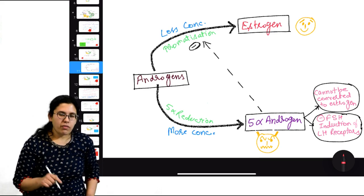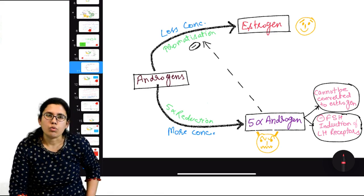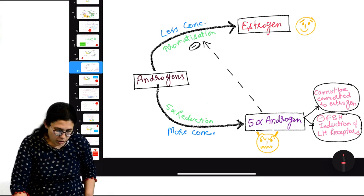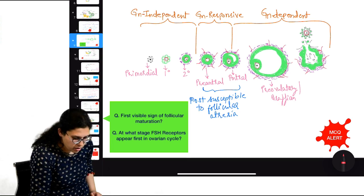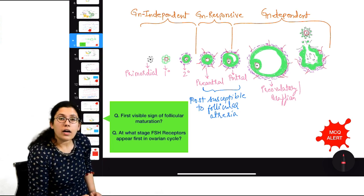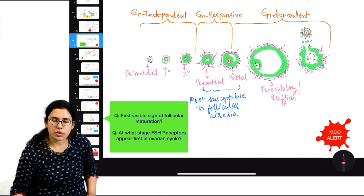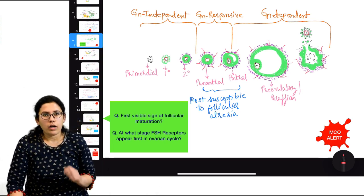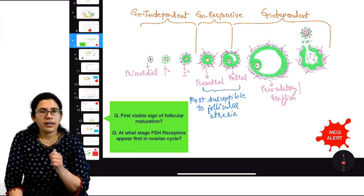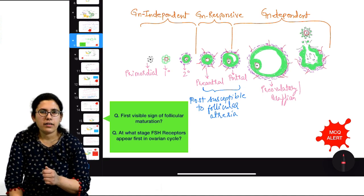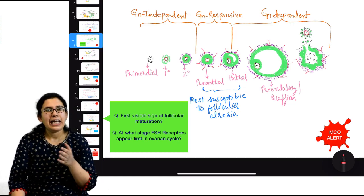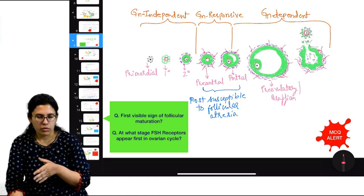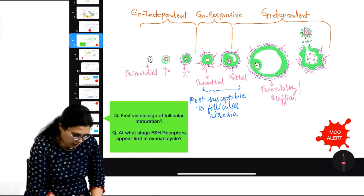5-alpha androgen also inhibits FSH-induced LH receptor formation on granulosa cells — this is an important developmental change needed at the end of follicular phase for the follicle to enter the luteal phase. So good competitor follicles are those with lots of estrogen and less androgen.